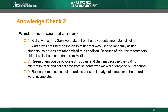Knowledge Check 2: Which of the following is not a cause of attrition? A. Ricky, Elena, and Sam were absent on the day of outcome data collection. B. Martin was not listed on the class roster used to randomly assign students, so he was not randomized to a condition and the researchers did not collect outcome data from him. C. Researchers could not locate Jim, Juan, and Samina because they did not attempt to track students who moved or dropped out of school. D. Researchers used school records to construct study outcomes, and the records were incomplete. The correct answer is B. Martin was not randomized to any condition — a participant must be randomly assigned to be counted as attrition. Students being absent on the day of data collection counts as attrition, so choice A is incorrect. Students changing or dropping out of school is a common cause of attrition, so choice C is incorrect. Missing outcome data from incomplete student records is also considered attrition, so choice D is incorrect.